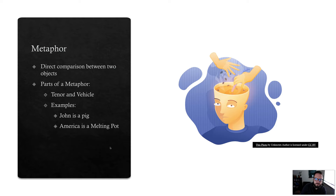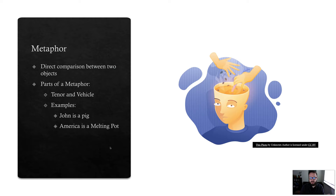Another really common figure of speech is metaphor. These are direct comparisons between two objects that are not like each other. This is not to be confused with simile — saying someone's 'sly as a fox' or 'quick like a bunny.' Those have the word 'like' or 'as' — it's an indirect comparison. Metaphors have two parts: the tenor and a vehicle. The tenor is the thing being compared, and the vehicle is what it's being compared to.